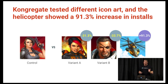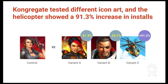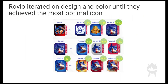Here are a few examples from successful game developers who use store listing experiments. Congregate tested different icon art and saw a 91% increase in installs just by testing the icon. Rovio used three rounds of testing until they found the optimal winner — it may have taken a little longer, but it was completely worth the investment as they were able to iterate and incorporate their learnings.